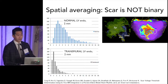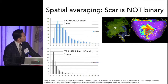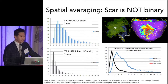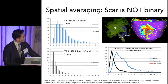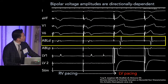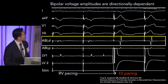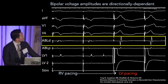We understand the limitations of scar. This is an ex vivo porcine MRI scar where we did the histogram of normal left ventricular voltage as well as transmural. There is an overlap and scar is not binary. Up to three or four millivolts is consistent with normal voltage, but there's a tremendous overlap — at 1.5 or 2 millivolts, you could be sitting on transmural scar or normal. There's also directional dependence in terms of orientation, with a very drastic difference in voltage on RV to LV pacing.